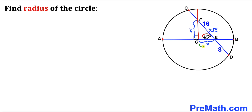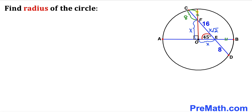We know that segment OE is X and the other radius is X as well, and both of these are radii of the same circle, so these lengths are equal. That means both sectors are congruent, so the side length 8 equals this other side length 8 as well. We know the whole segment CE is 16, so we conclude that segment EF is 8, and we also know EF equals X times square root of 2.